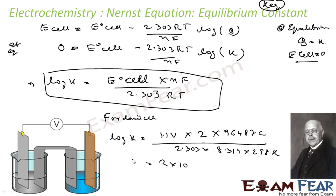This actually you get is 37.288. Yes, log K is 37.288, so K becomes 2 into 10 to the power 37 at 298 Kelvin.